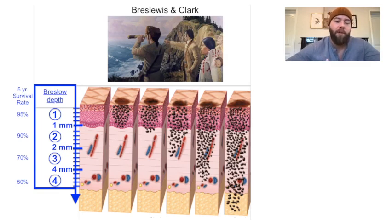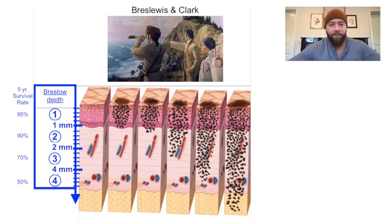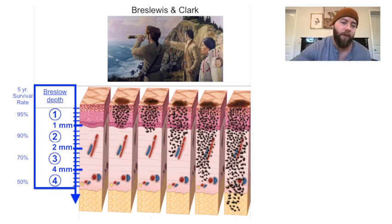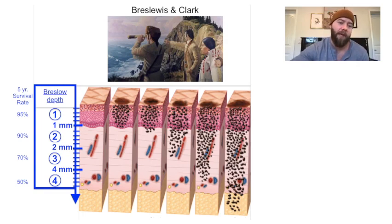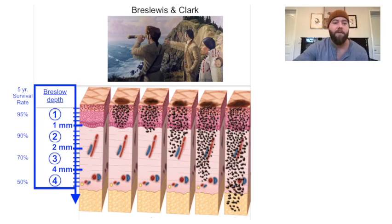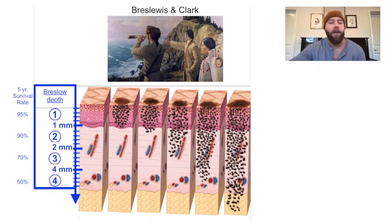Memorize 1, 2, and 4 millimeters. Stage 1 is less than 1 millimeter. Stage 2 is between 1 and 2 millimeters. Stage 3 is 2 to 4 millimeters. And stage 4 is 4 millimeters or greater. The simplest way to summarize this is the 5-year survival rates: stage 1 has a 95% 5-year survival rate, stage 2 is 90%, stage 3 drops to 70%, and stage 4 is 50%.